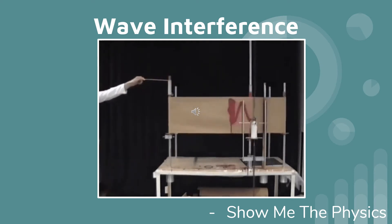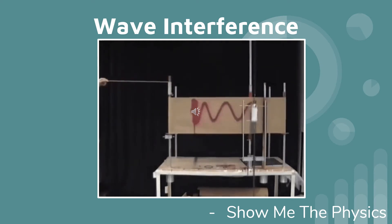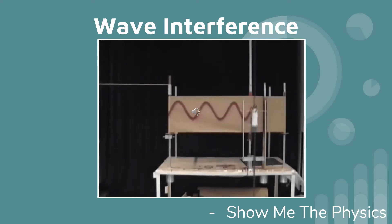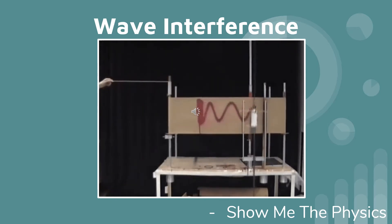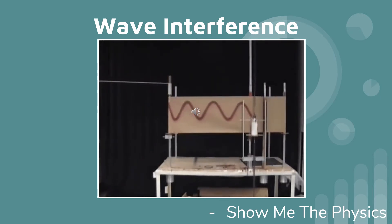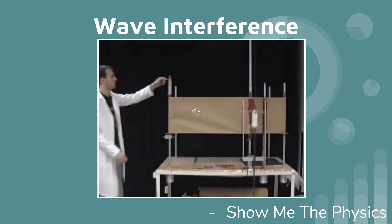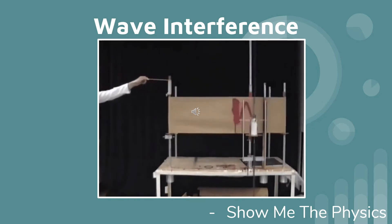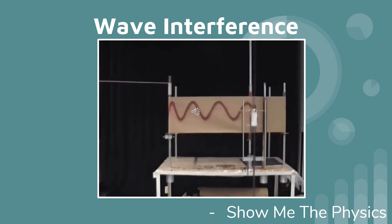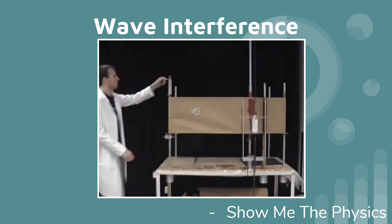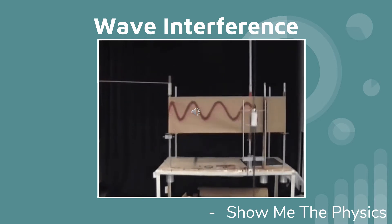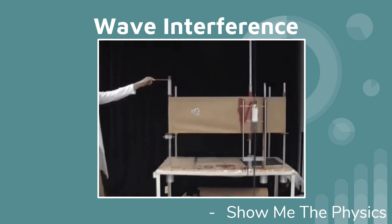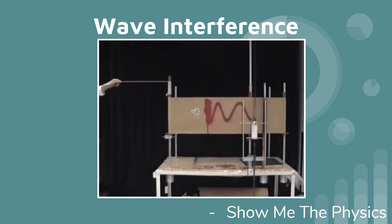Wave interference. In this presentation, you will learn what happens when two waves overlap. You will learn that sometimes they overlap constructively, and the two waves create a single wave with greater energy, and sometimes they overlap destructively. When they overlap destructively, the resulting wave has an energy or amplitude that is smaller than the two original waves.